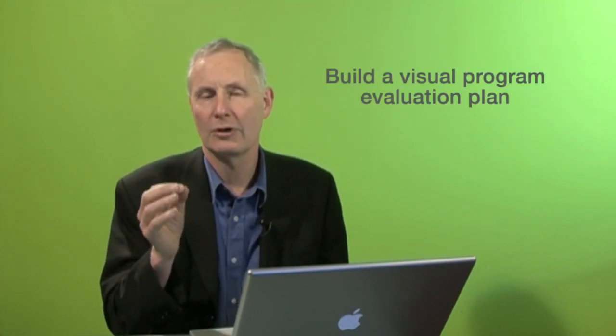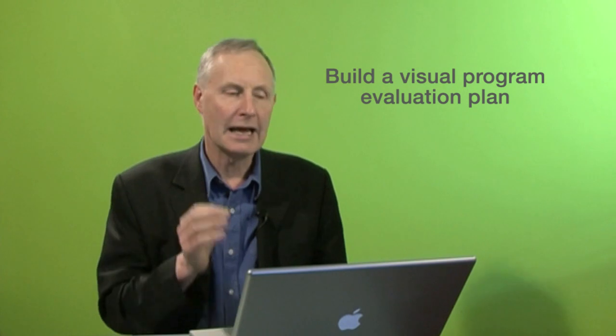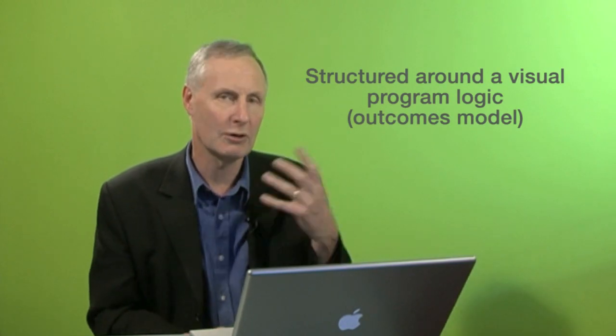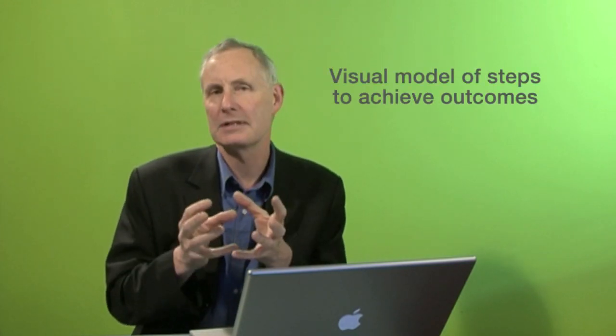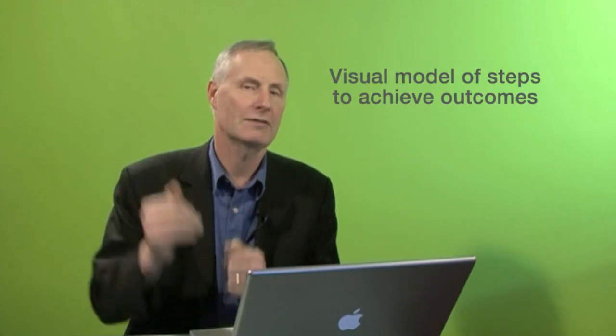And this better way, I think, is to build a visual program evaluation plan. And to do this, we structure our plan around a thing called a program logic. And a program logic, as you'll know if you've seen some of the other videos in the series, is simply a model which sets out all of the steps that we need to take in order to achieve higher level outcomes. No more complicated than that, and it's known by various names, intervention logic, results map, theory of change, etc.